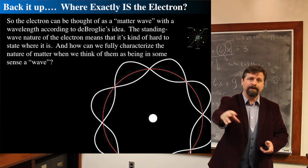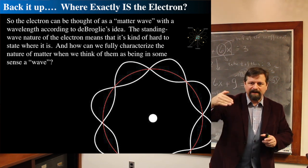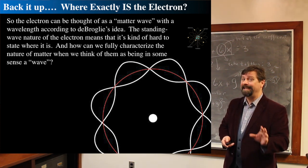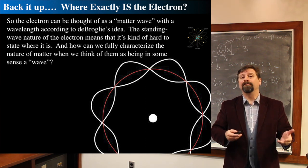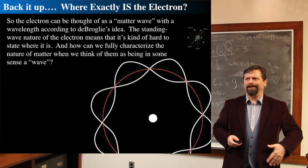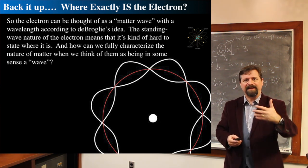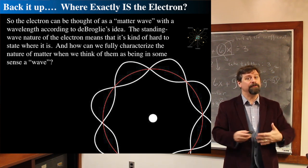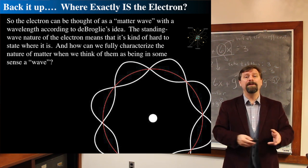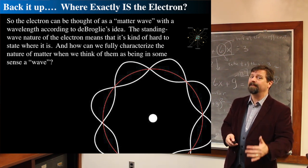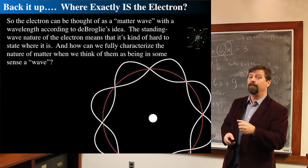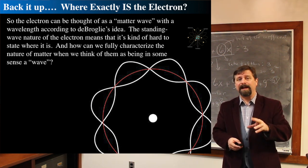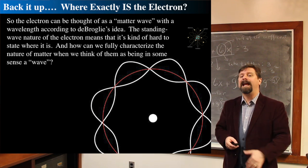The Bohr model and de Broglie's model explain Kirchhoff's empirically derived laws about the nature of spectra. This leads us to the incredibly important idea that spectroscopy is the most key thing we have in all of astrophysics — it is everything. We can determine what elements are present by modeling the spectrum, and also determine temperatures and pressures from the widths of lines and Doppler shifts. It all comes from the simple concept of the model of the atom.